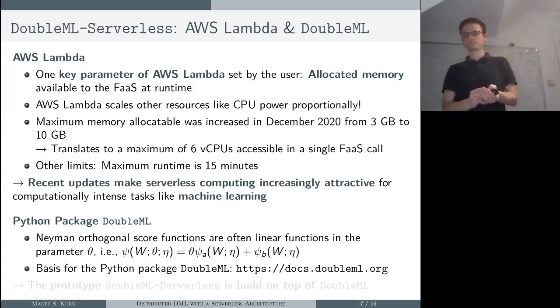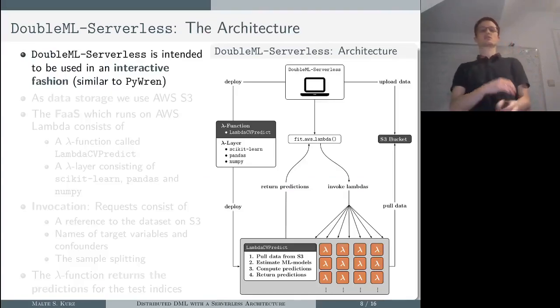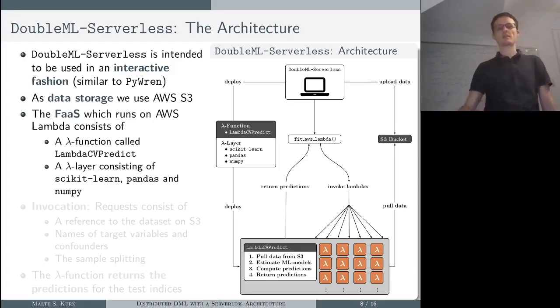An important basis for our prototype is the Python package DoubleML. It implements the double machine learning framework in a quite general object-oriented way. If you are interested, take a look at doubleml.org where you find some extensive documentation. Let us have a look at the architecture of our prototype. DoubleML-Serverless is intended to be used interactively, similar to Python, so basically you run a local session and you just ship the most computationally intense tasks—the estimation of the ML models—to the serverless cloud platform. As data storage, we use the AWS S3 object storage, and then we have a key component: the Function-as-a-Service, which consists of a Lambda function which does the actual repeated cross-fitting, and a Lambda layer which basically just provides the dependencies like scikit-learn, pandas, and numpy.